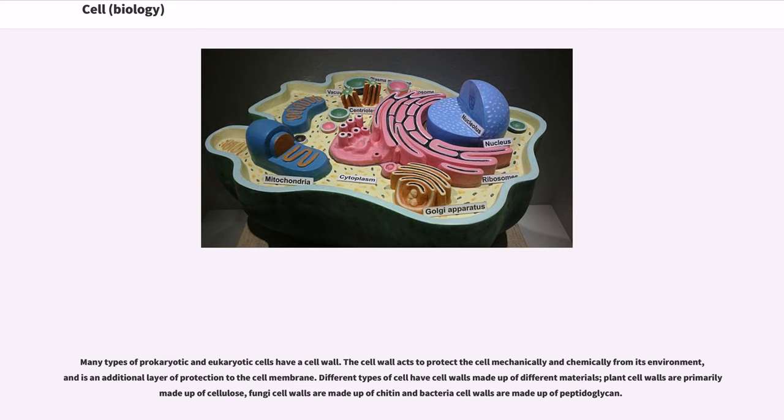Different types of cells have cell walls made up of different materials. Plant cell walls are primarily made up of cellulose, fungi cell walls are made up of chitin, and bacteria cell walls are made up of peptidoglycan.